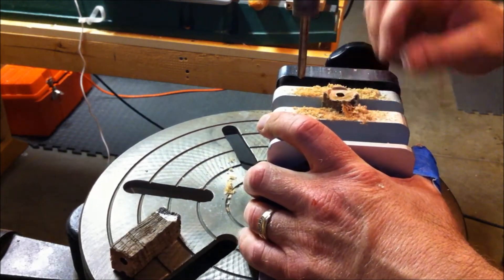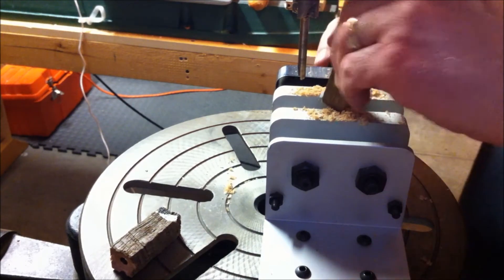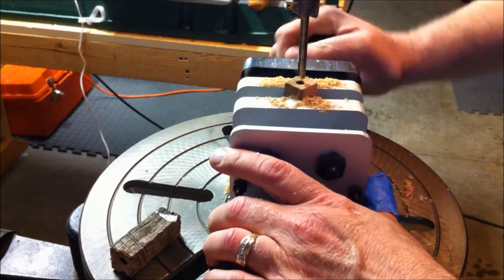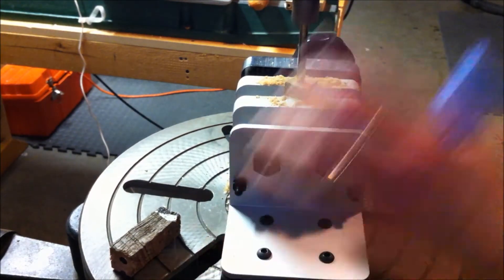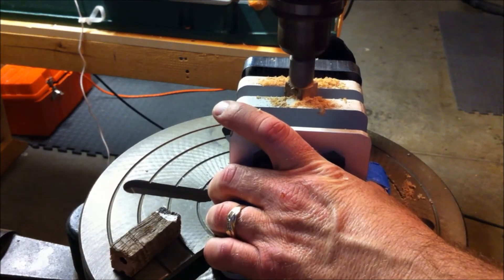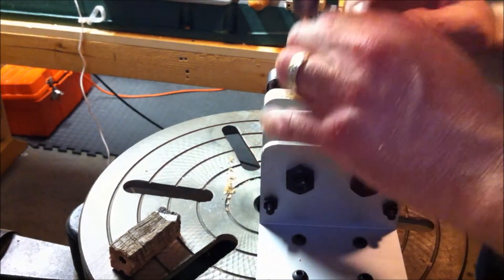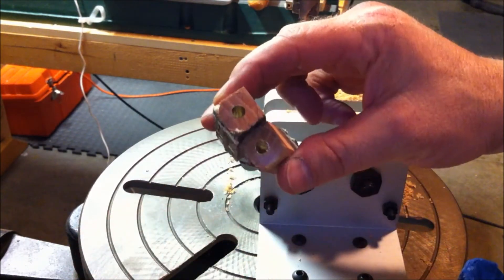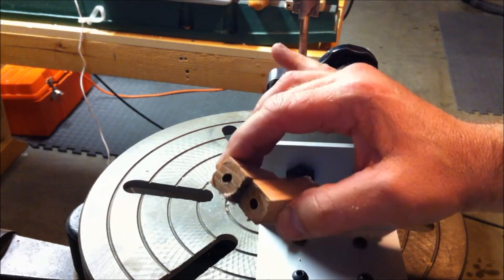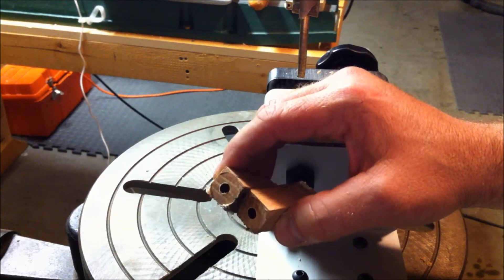As soon as I see the brass shine through, I know I'm done and I stop. Alright, the slimline pin is trimmed and ready to go. So, let's change out the barrel trimmer to the 10mm trimmer, and we'll get Don's bullet pin trimmed out.